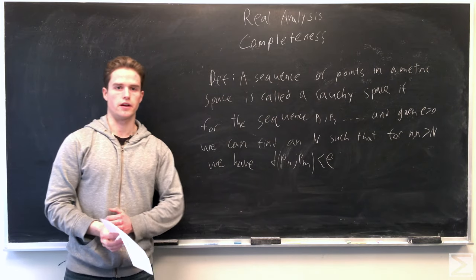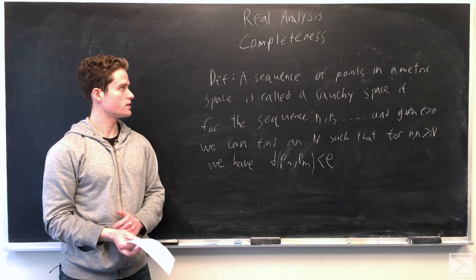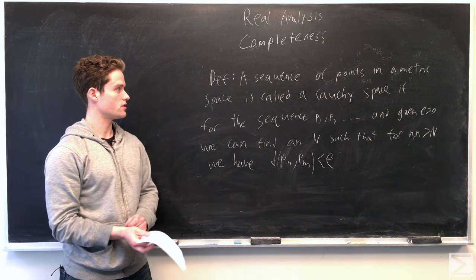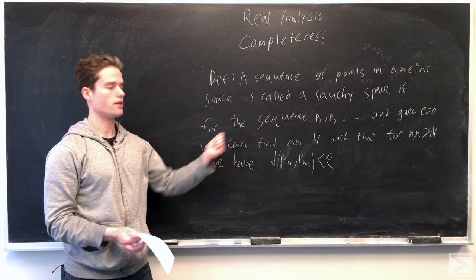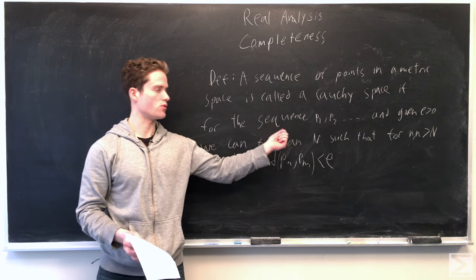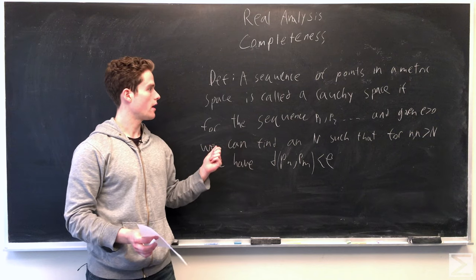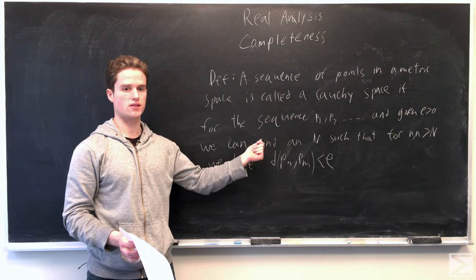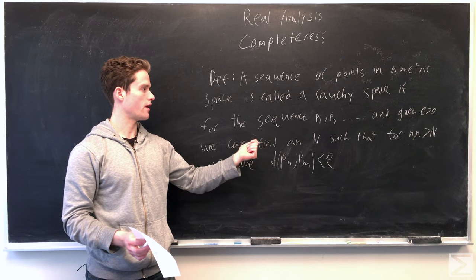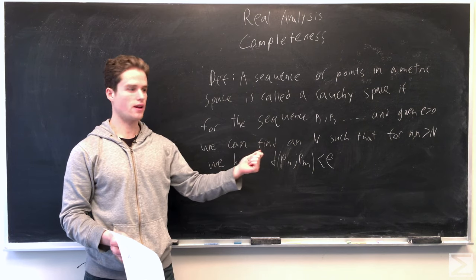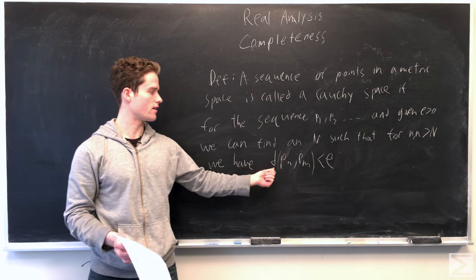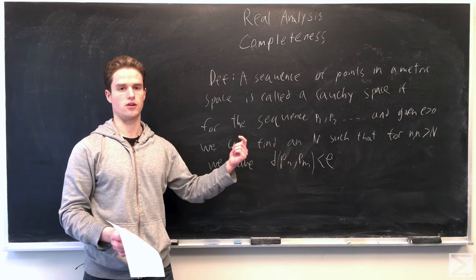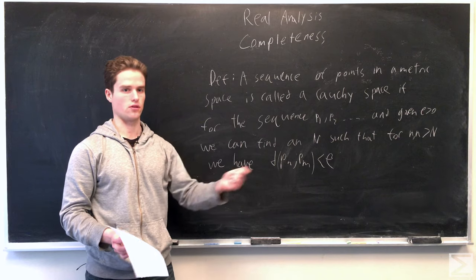First we're going to define a Cauchy sequence. A sequence in a metric space is called a Cauchy sequence if, given the sequence P1, P2, ..., we can find some big N such that for n, m bigger than this big N, the distance between P_n and P_m is less than epsilon. So these points in the sequence get arbitrarily close to each other as you go further along.